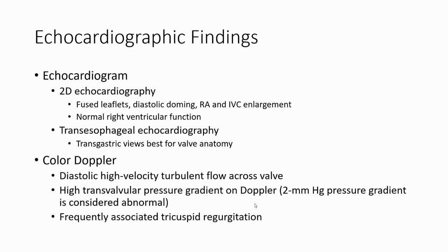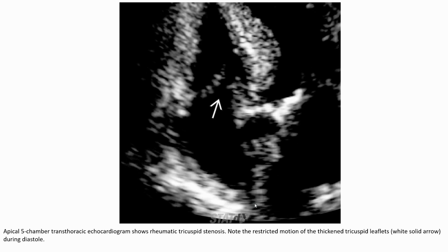On color Doppler, we can find diastolic high-velocity turbulent flow across the valve and high trans-valvular pressure gradient on Doppler, frequently associated with tricuspid regurgitation. This echocardiography image shows rheumatic tricuspid stenosis with restricted motion of the thickened tricuspid leaflets during diastole.